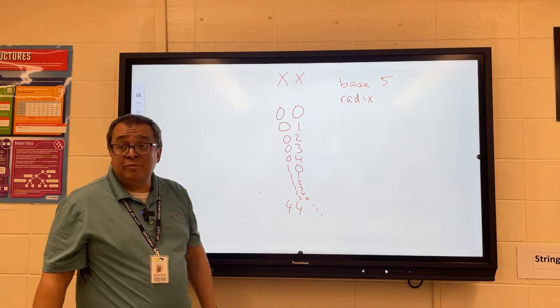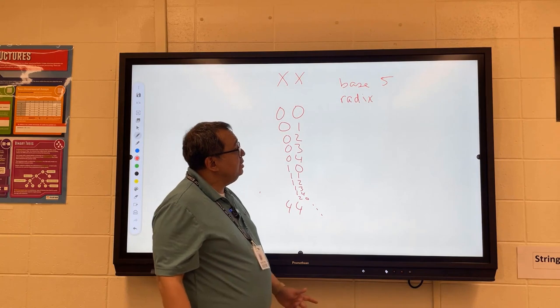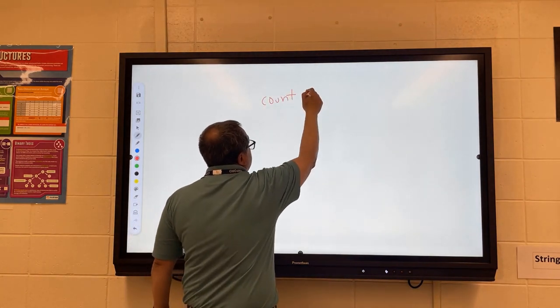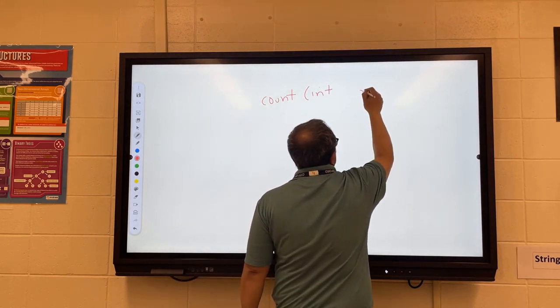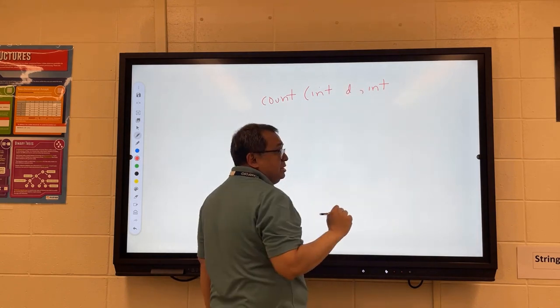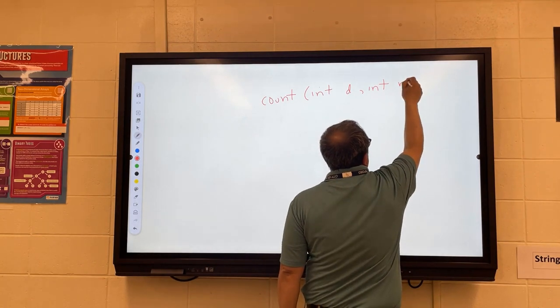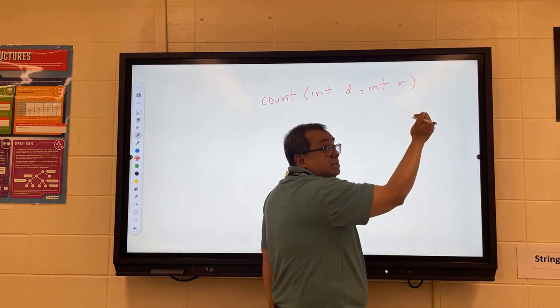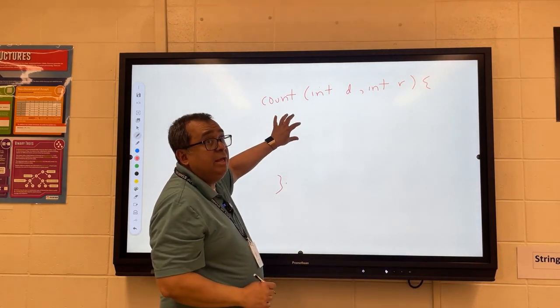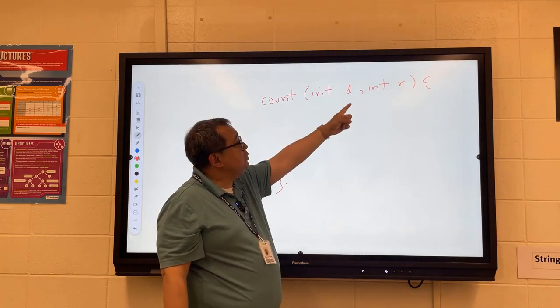Base 5. We want to write a method. We want to write a method that basically takes two integers, and we'll say that it takes two integers. This will be how many digits, so I'll say the number of digits, that'll be D, and then this will be the radix, so I'll say R. You can think of it as the base, right?